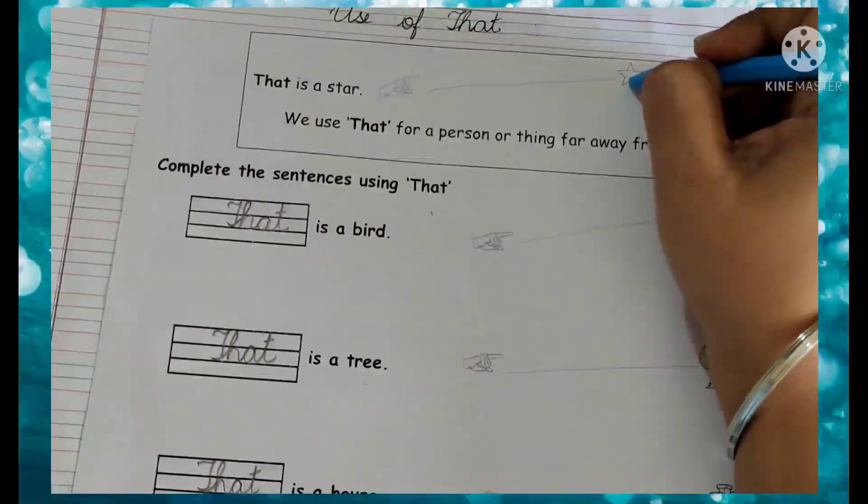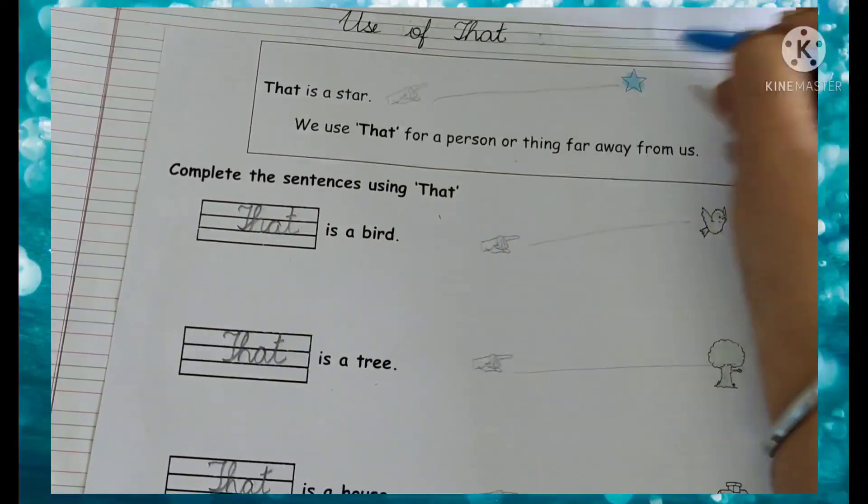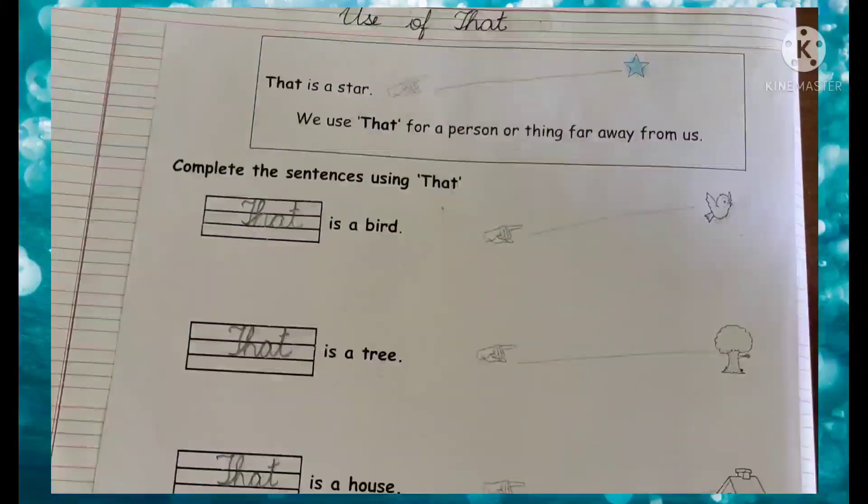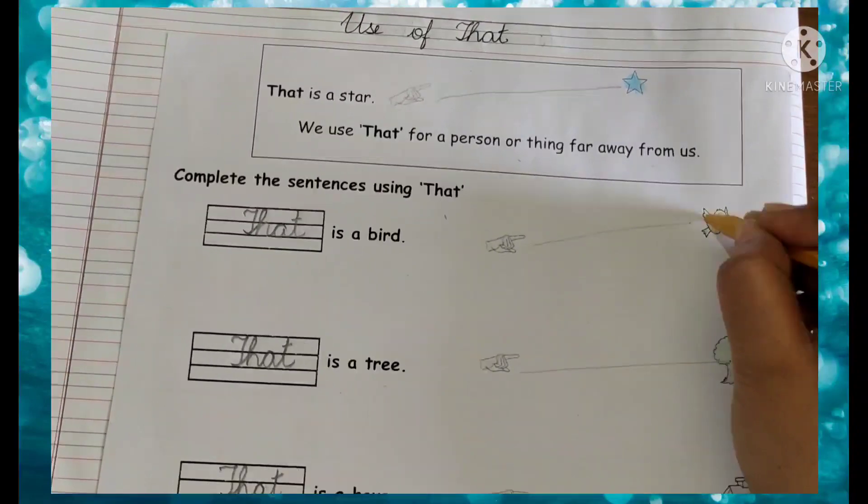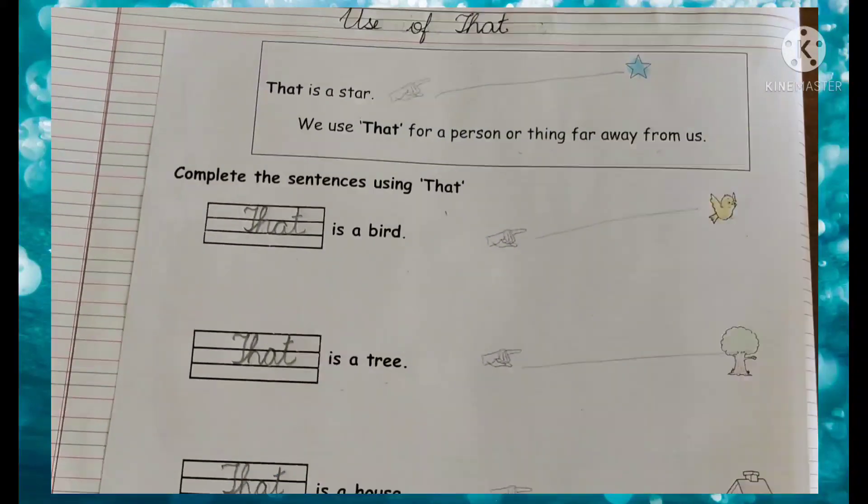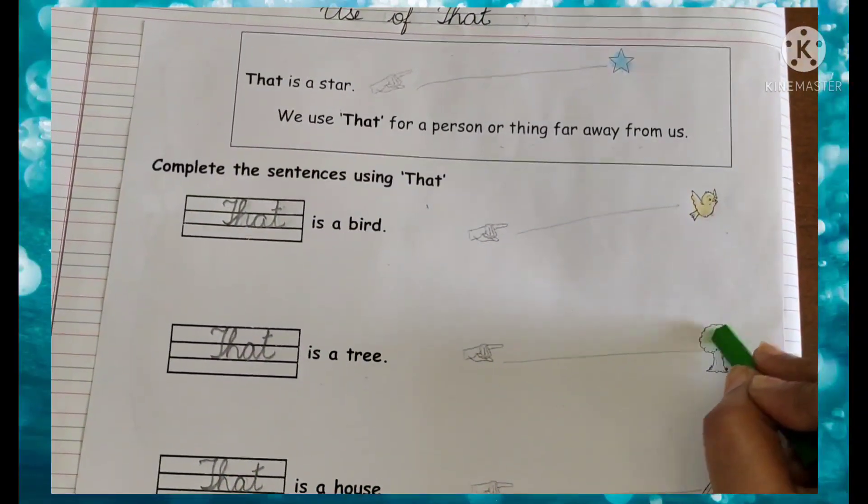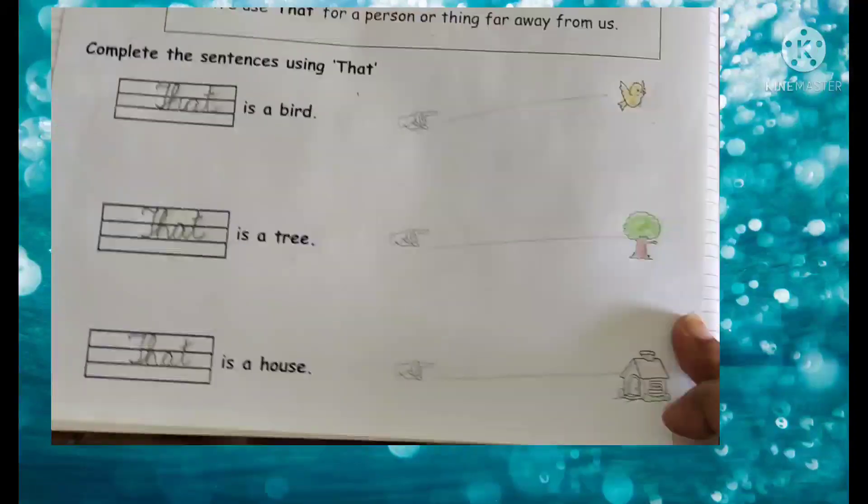After completing, we will color the pictures. First I will color the star. Then I will color the bird, like this. Then I will color the tree, color the house.